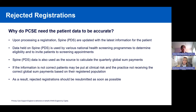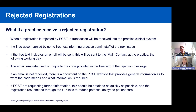When a registration is rejected by PCSE, a transaction will be received into the clinical system for the practice, accompanied by some free text informing admin staff of the next steps. If the free text indicates an email will be sent, this will be sent to the main contact listed for the practice by the following day. An email template is used for each unique rejection code. If an email is not received, there is a document on the PCSE website providing general information on what the code means and what information is required. Any requested information should be obtained as quickly as possible and the registration resubmitted through GP Links.